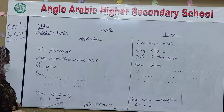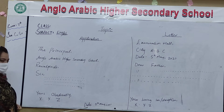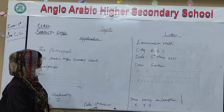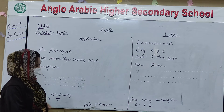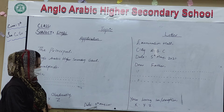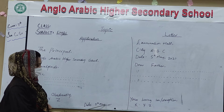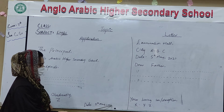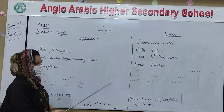After that, X dot, Y dot, and Z dot. You have to write the date at this side, in this pattern: '5th May,' comma, '2021,' full stop.